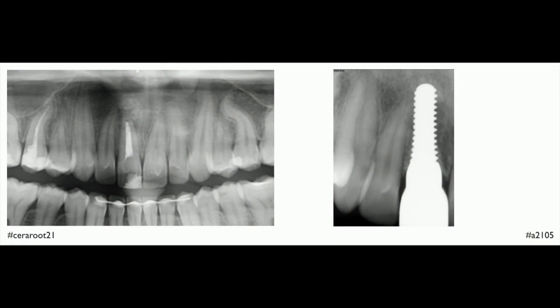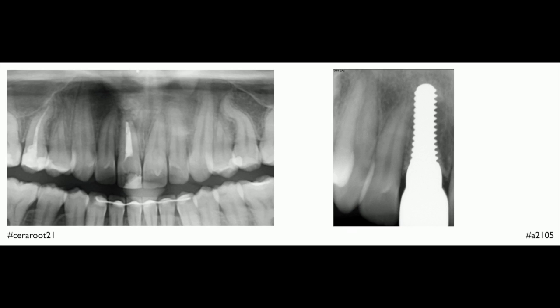Here is a closer look. The before panoramic x-ray and this is one year after. We can see the emergence profile of the tooth and the implant. Here is where the implant finishes and the crown begins. All the space between the bone and the shoulder for the crown is the space for the biologic width that will be attached on the surface of the implant.